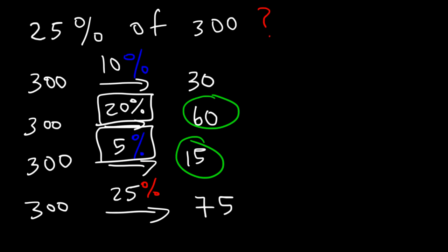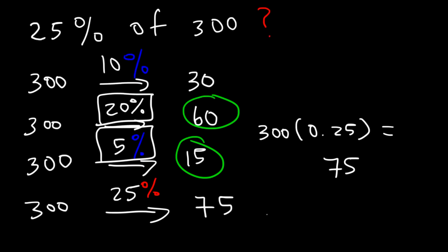60 plus 15 is 75. Let's confirm this answer with the calculator: 300 multiplied by 0.25 — which is 25% as a decimal — indeed gives you 75.